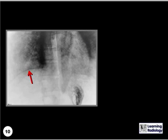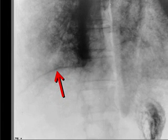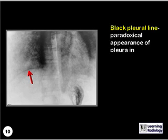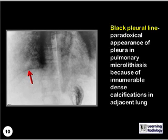What sign is being demonstrated here in this rare and unusual disease? That's the black pleural line, which is the paradoxical appearance of the pleura in pulmonary microlithiasis because of the innumerable dense calcifications which are present in the lung in that disease.